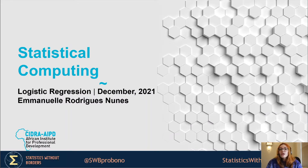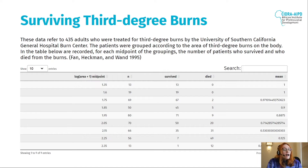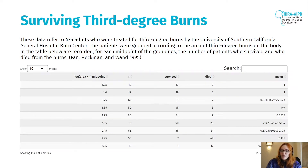So you have a problem, you decide that you need to solve it using a logistic regression — how do you actually do that? Let's start. I'll be using an example called 'Surviving Third-Degree Burns,' which can be found at Penn, Heckman, and Wendt from 1995.